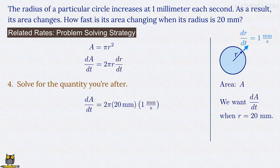And now just a little math. 2 pi times 20 times 1 is 40 pi, and the units are millimeters squared per second, which are just the units we expect for the rate of change of an area, which should be millimeters squared, with respect to time, which is measured in seconds. And that's it! Our final answer is 40 pi millimeters squared per second.